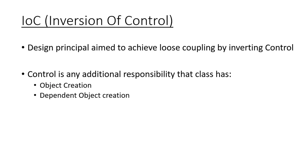The main aim of the IOC principle is to achieve loose coupling by inverting control. Loose coupling means components should be independent — components should not depend on each other tightly. Our aim is to avoid tight coupling by using the IOC principle. Inversion of Control means we want to invert the control, where 'control' refers to any additional responsibility a class has, such as creating an object of another class. As per IOC, we want to remove that additional responsibility so we can achieve loose coupling between different classes or components.